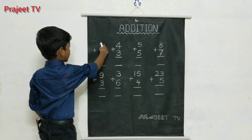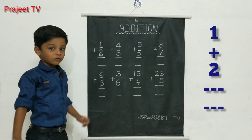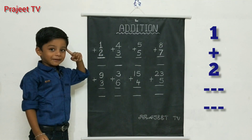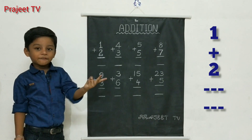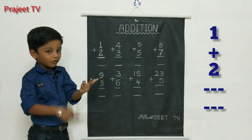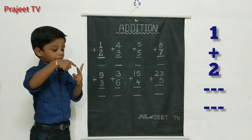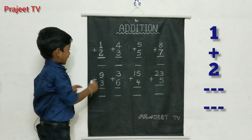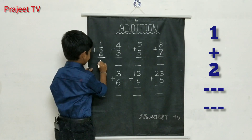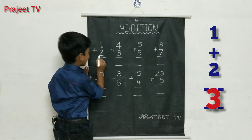One plus two. One in the mind, two in the fingers. One after two — three. Answer: three.